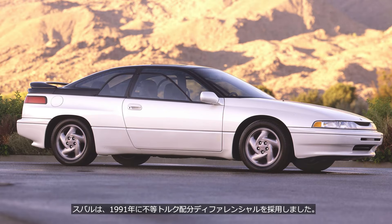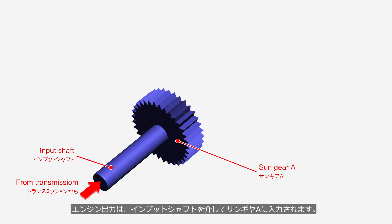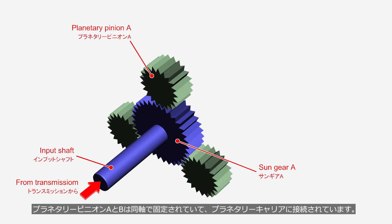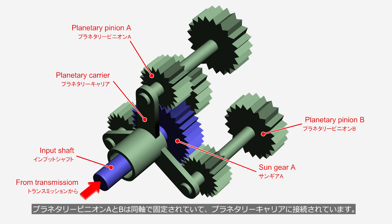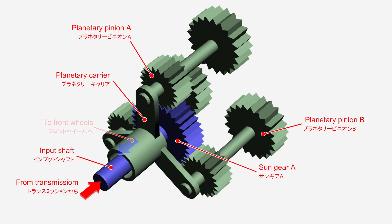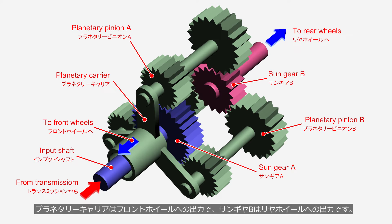In 1991, Subaru adopted an uneven distribution differential system. The center differential of this system consists of two sets of planetary gear sets. Engine output is input to the sun gear A through the input shaft. The planetary pinions A and B are fixed on the same axis and connected to the planetary carrier. The planetary carrier outputs to the front wheels, while the sun gear B outputs to the rear wheels.